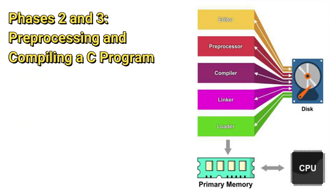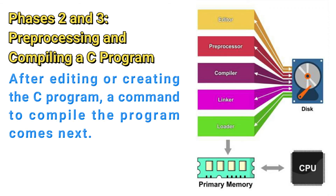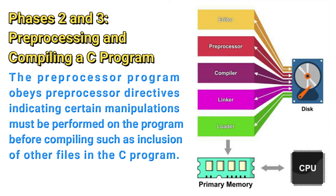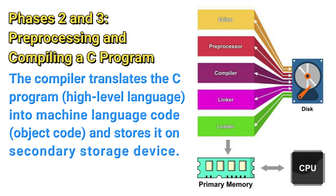Phases 2 and 3 are preprocessing and compiling a C program. Once you are done editing, you give the command to compile the program. In a C system, a preprocessor program executes automatically before the compiler's translation phase begins. The C preprocessor obeys special commands called preprocessor directives, which indicate that certain manipulations are to be performed on the program before compilation. These manipulations usually consist of including other files in the file to be compiled. In phase 3, the compiler translates the C program into machine language code, also known as object code, and stores it on disk.